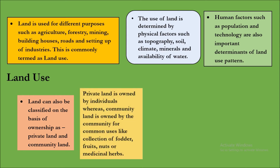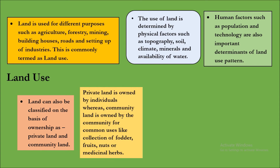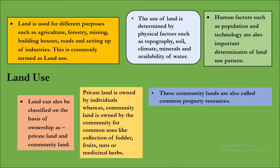Private land is owned by an individual, whereas community land is owned by a community for common uses like collection of fodder, fruits, nuts, or medicinal herbs. Community lands are also called common property resources.